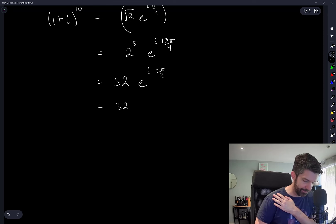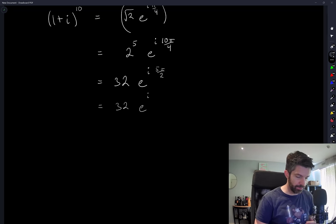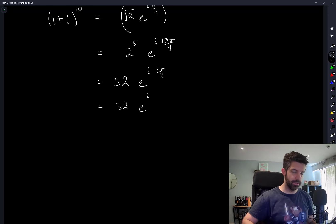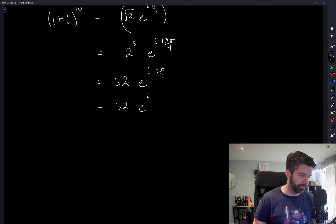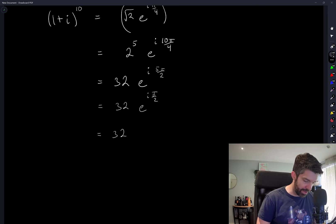Yeah, and 5π/2 is the same... 5π/2 is the positive imaginary axis, the positive imaginary direction, which is the same as e^(iπ/2). And e^(iπ/2) is i.